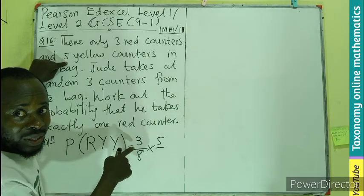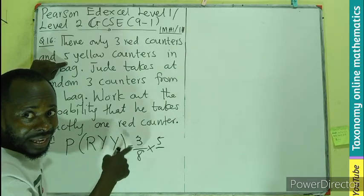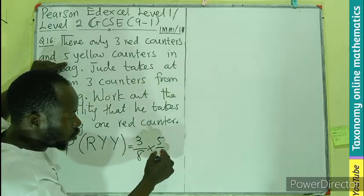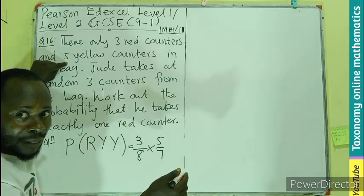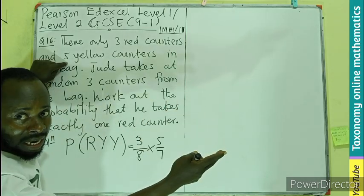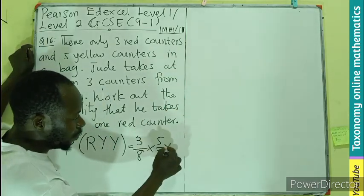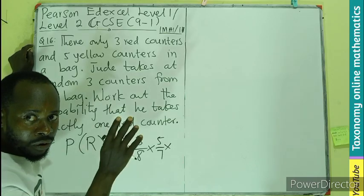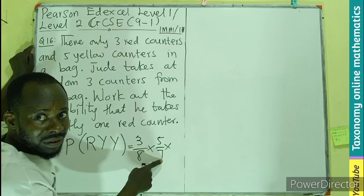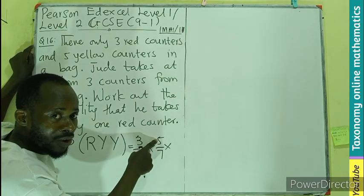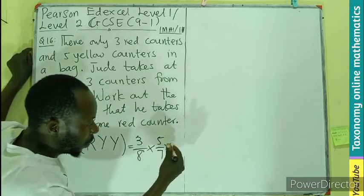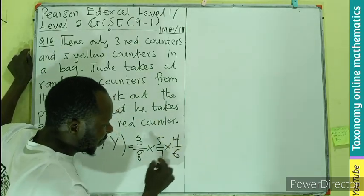Now, after picking the red, the total number of counters, because it's not with replacement, reduced to seven. After picking the red, it will be left with two of the red, then five of the yellow. Then for the third pick, yellow is gone, red is gone. So red reduces the total to seven. If I pick yellow again, the total will reduce to six. Then the total of yellow will also reduce to four. So four divided by six.